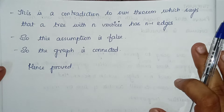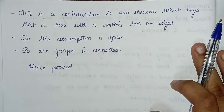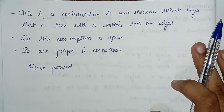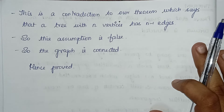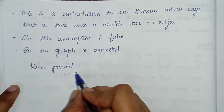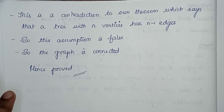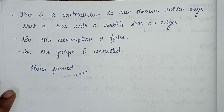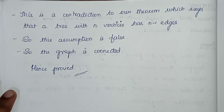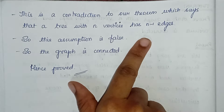We already have the theorem. So what we have assumed is wrong. The theorem is already proven — the graph is connected. In this theorem, a tree with n vertices has n-1 edges. So the assumption that the graph is disconnected leads to a contradiction.